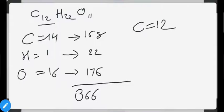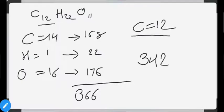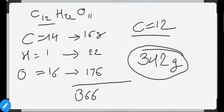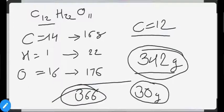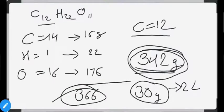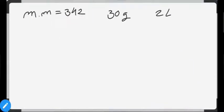For demonstration purposes, using the traditional carbon mass of 12, the molecular mass of sugar is 342 grams. In this example we use 30 grams of sugar in 2 liters of water with molar mass 342. Your actual numerical should use 366 and 20 grams. The goal is to find the concentration (molarity) of the solution.